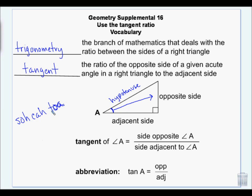Tangent is TOA. Tangent, opposite, adjacent. So opposite over adjacent. So I take this length and I divide it by that length.